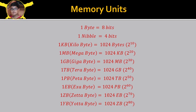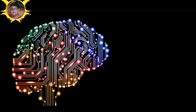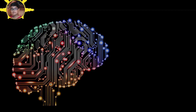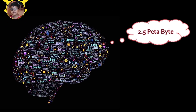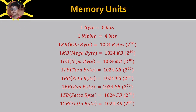Now let me give you the answer to the question I asked at the beginning: the memory of a human brain is approximately 2.5 petabytes. If we compare it to a computer, a computer usually has approximately 2 TB of memory. So as you can see from the comparison, the human brain has more memory than a typical computer.